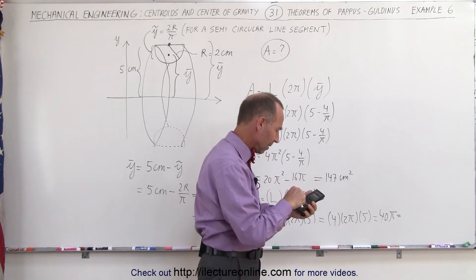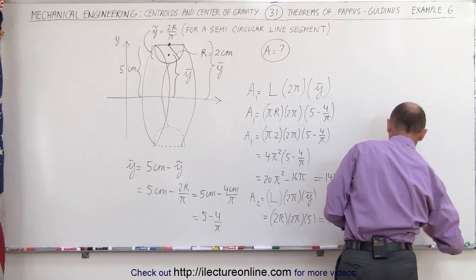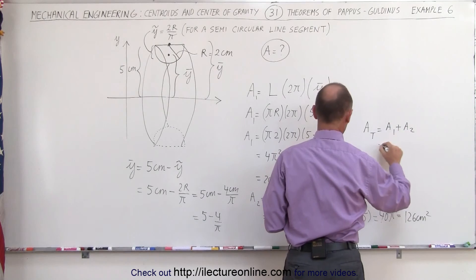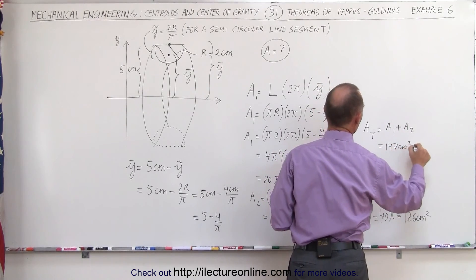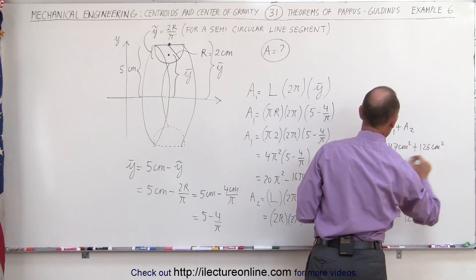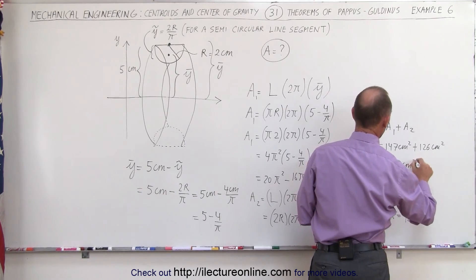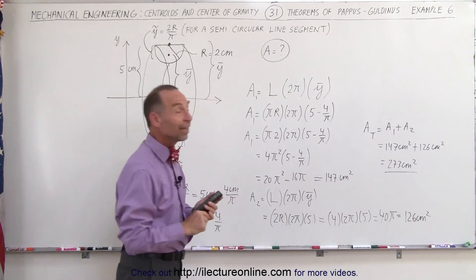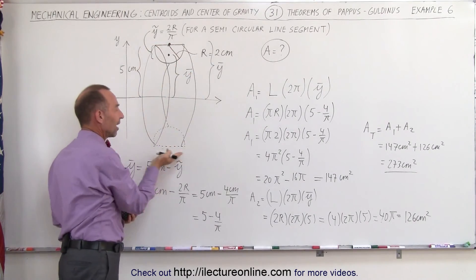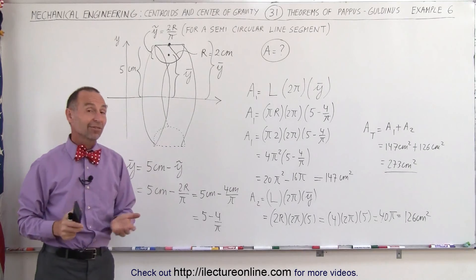40 times π equals approximately 126 square centimeters. So the total area — A total equals A1 plus A2 — is 147 cm² for the curved portion plus 126 cm² for the flat portion, giving us 273 centimeters squared for the total surface area of that half-donut shape, where the outside is flat instead of curved. That's how we do that.